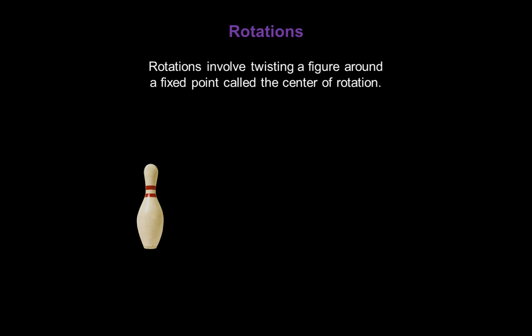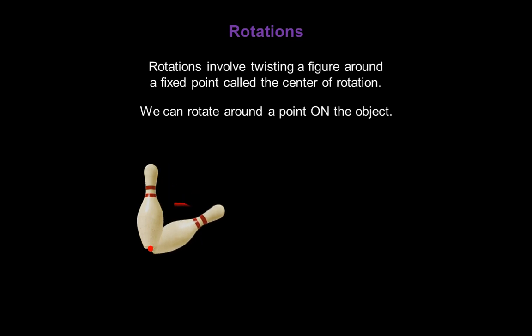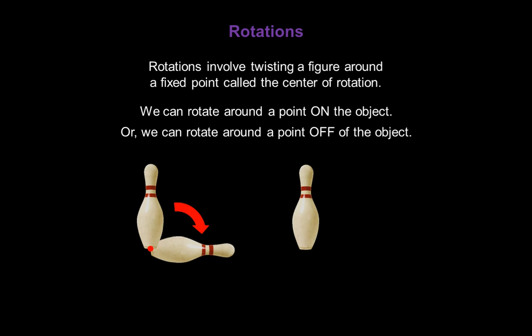Rotations involve twisting a figure around a fixed point called the center of rotation. We can rotate around a point on the object, like this. Or we can rotate around a point off of the object, like this.